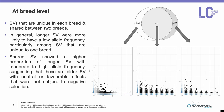On the other hand, shared structural variants show a higher proportion with moderate to higher allele frequency. This suggests that these structural variants may be older and have neutral or favorable effects, and therefore were not subjected to negative selection.